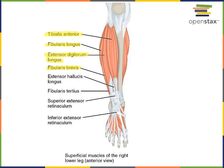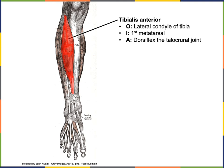Fibularis brevis is a slightly shorter muscle located adjacent to and just anterior to fibularis longus. Fibularis brevis also performs plantar flexion and eversion of the talocrural joint. Deep to tibialis anterior and extensor digitorum longus is the extensor hallucis longus — another muscle named after its action — which extends the hallux, or great toe, the first pedal digit.